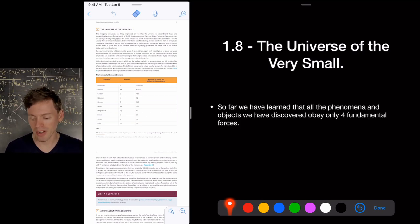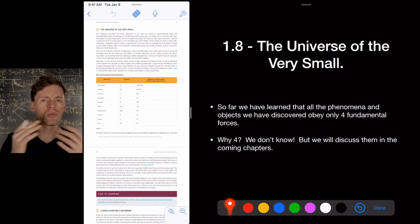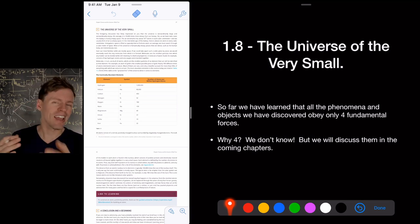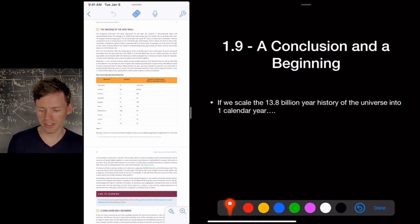So far we've learned that all the phenomena and objects that we have discovered obey only four fundamental forces. Why are there only four? We don't know, but we will discuss those four forces, what they do, the strong, the weak, gravity, and the electromagnetic force, those four forces govern all of the phenomena we see in the universe, and they're summarized in something called the standard model of particle physics, and then general theory of relativity. So, what we're going to talk about all those, coming up. We don't know why there's only four, but those four govern everything that I've talked about so far. And, just keep that in mind when we're talking about the laws of nature.